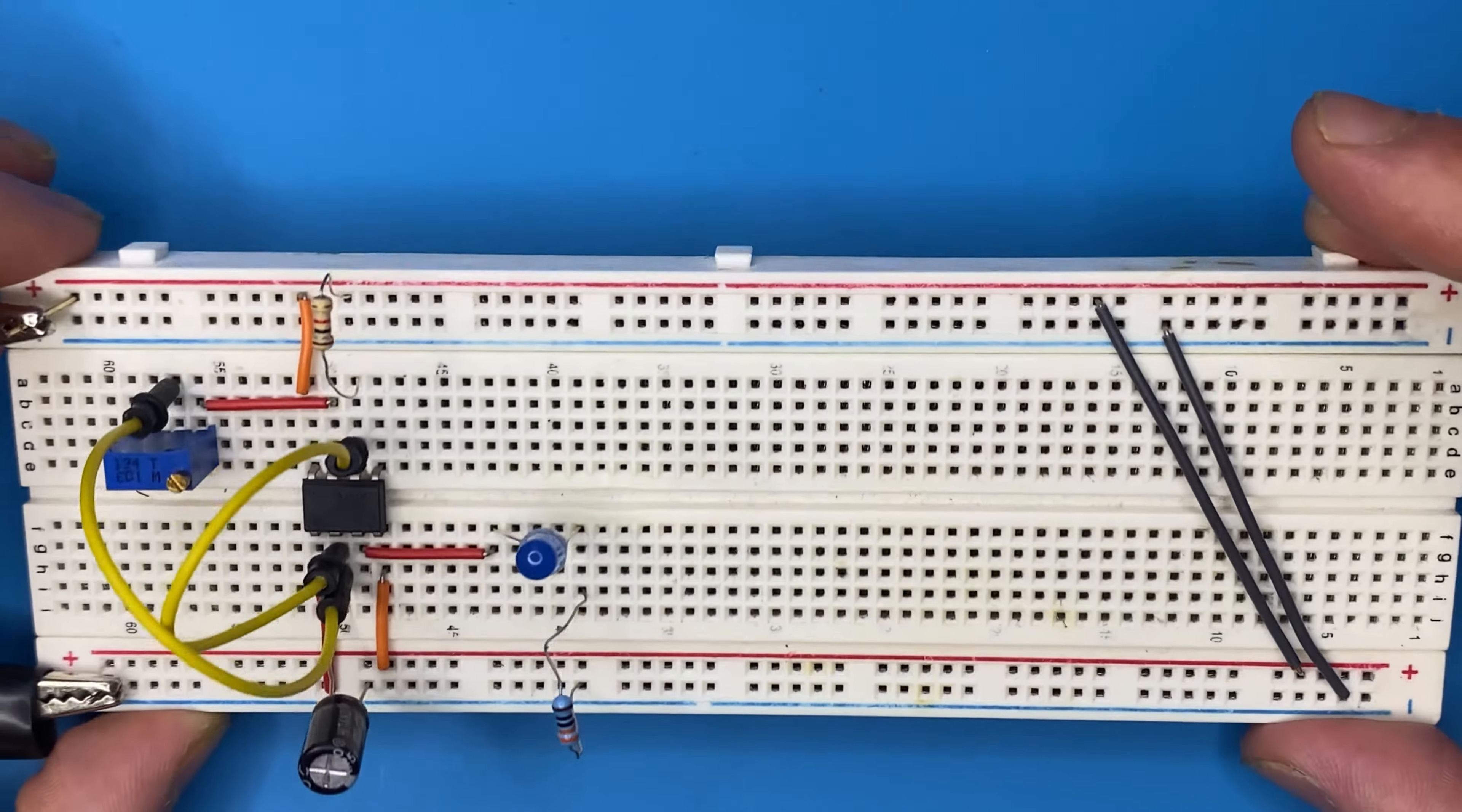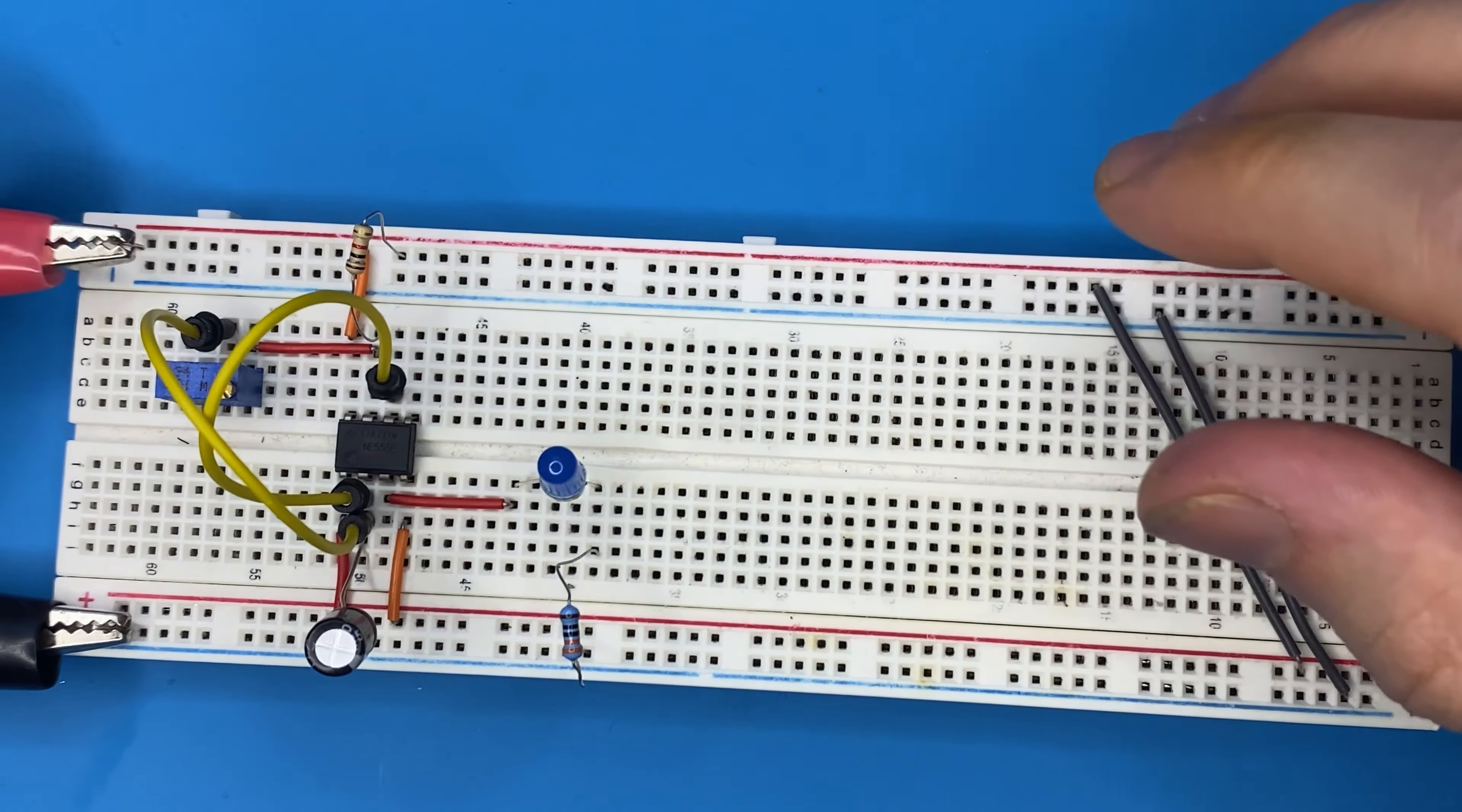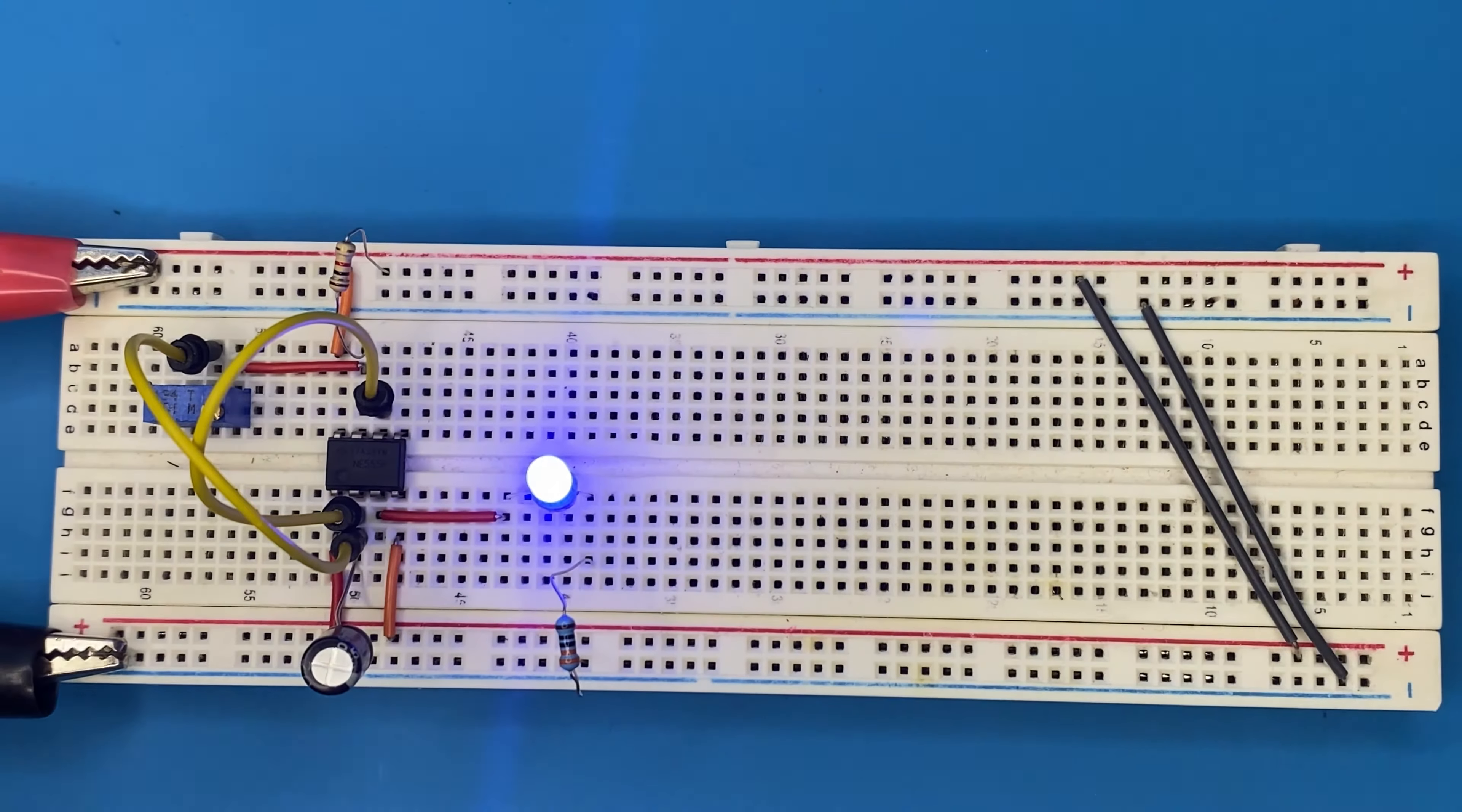So there might be a problem with the wiring here. I've connected the resistor to the 6 pin of the IC. Now let's test once more. So as you can see, the LED flasher circuit works successfully.